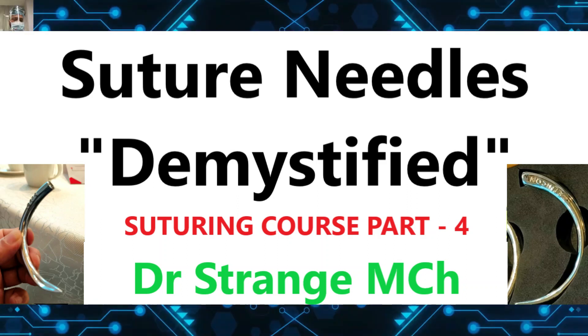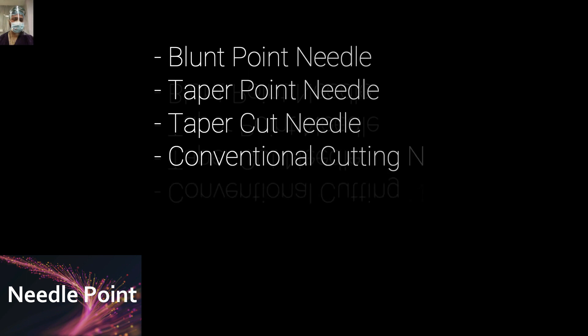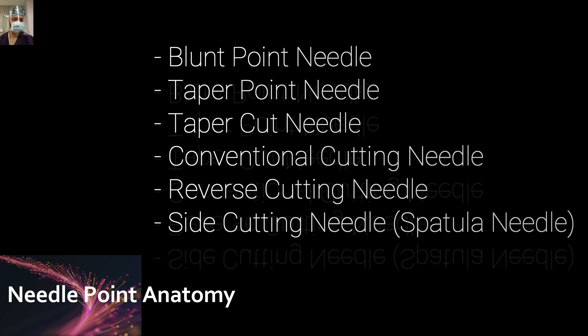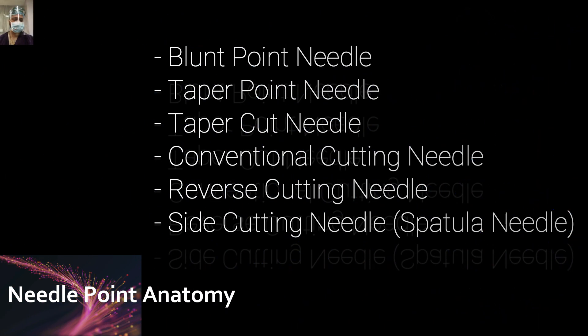Note, my friends: there are six types of needle point tips available — blunt point, taper point, taper cut needle, conventional cutting needle, reverse cutting needle, and side cutting needle or spatula needle. We'll discuss each one by one, as it's important to understand where to use each and what the advantages and disadvantages are.